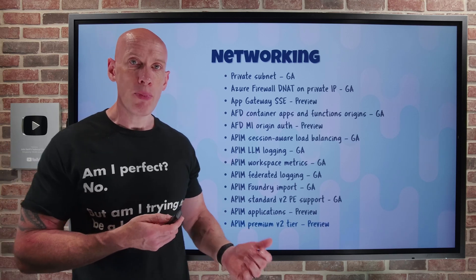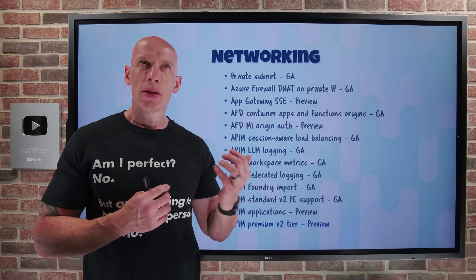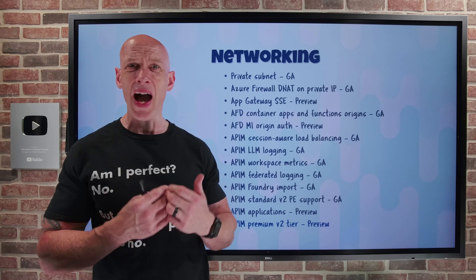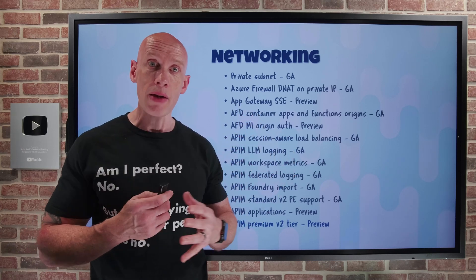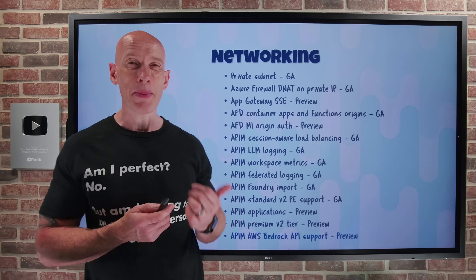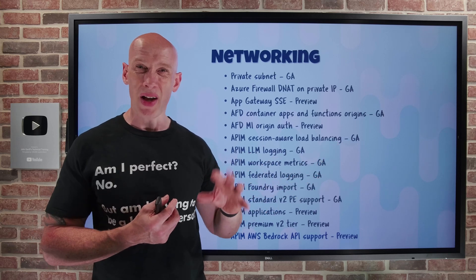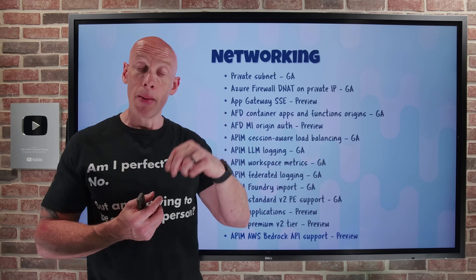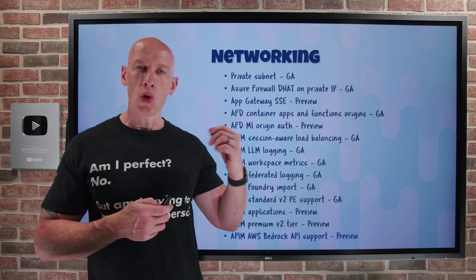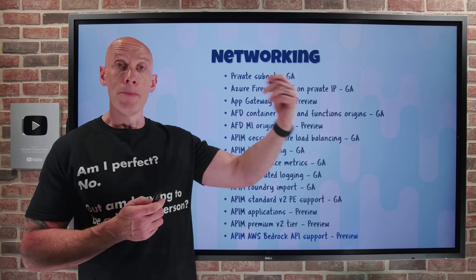API-M Premium V2 tier is in preview. It's an architectural change that separates management traffic from the regular data plane, so I no longer have to worry about connectivity needed for management operations. It has unlimited calls and very high limits, targeting the largest-scale API requirements. And API-M now supports AWS Bedrock APIs in preview. Once I've onboarded an AWS Bedrock model endpoint — that's the AWS service for running foundational models like language and multimodal models — I can apply API-M policies: token limits, metrics, semantic caching, and more. This is a big deal for multi-cloud scenarios.